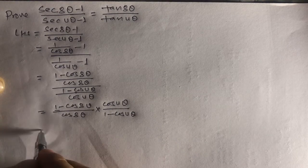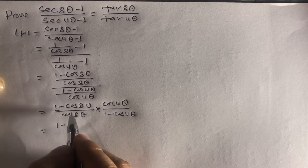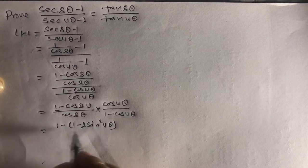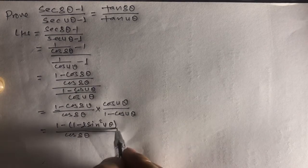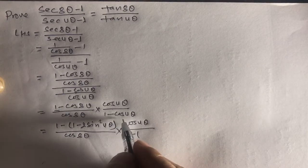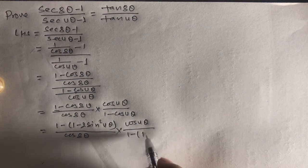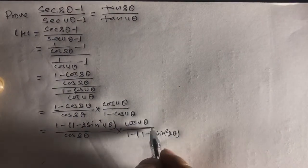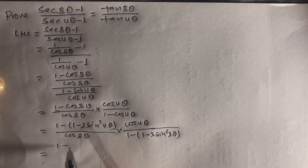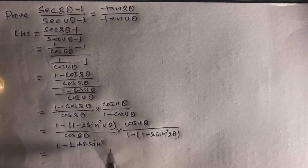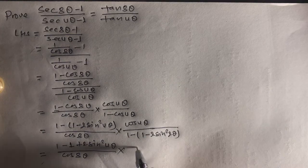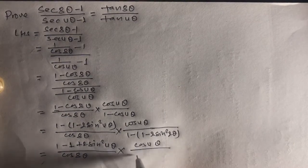Now, 1 - cos8θ equals 1 - cos(2×4θ), so we write it as 2sin²4θ. The expression becomes 2sin²4θ/cos8θ multiplied by cos4θ/(1 - cos4θ). Similarly, 1 - cos4θ equals 1 - cos(2×2θ), which we write as 2sin²2θ.